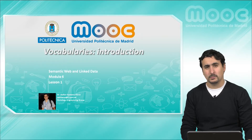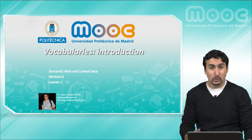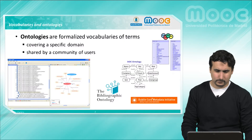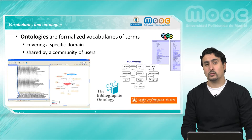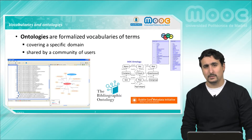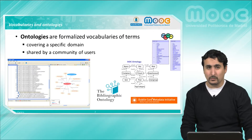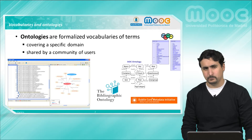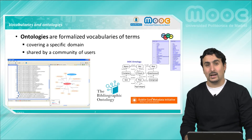Hi all and welcome to this sixth module of the course. In this series of videos we are going to talk about the role of vocabularies in the context of the semantic web and linked data. Most of the time when we talk about vocabularies we will be referring to ontologies, which can be seen as a set of formalized and agreed terms. Ontologies usually refer to one domain, covering the concepts and relations within it, and most of the time are developed within the context of a given community of experts and users.